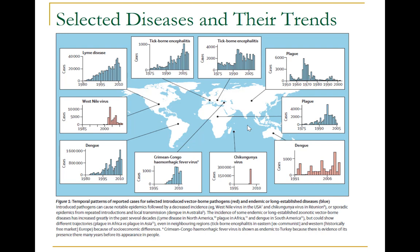Other introductions of vector-borne diseases have caused smaller outbreaks but have been important in expanding the range of human populations at risk. For example, dengue virus has spread to Hawaii, Zika virus to the Micronesian island of Yap, and chikungunya virus to Europe. A key challenge arises from the non-specificity and similarity of symptoms caused by many of these viruses — especially Zika, dengue, and chikungunya — which all present with acute fever similar to many diseases endemic in the tropics, such as malaria.